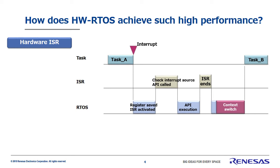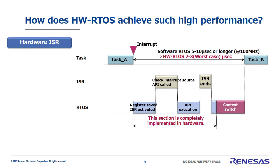However, with hardware RTOS, this blue section here is all implemented in hardware, resulting in very fast execution. Implementing this entire ISR function in hardware is what we call hardware ISR. Using hardware ISR means this entire period is run in hardware, meaning it can be executed very fast. With the conventional software RTOS, the interval to switch from task A to task B can take from 5 to 10 microseconds or possibly more on a 100 megahertz operating clock. A hardware RTOS with hardware ISR installed can run it in 2 to 3 microseconds — 3 microseconds is the maximum theoretical limit, meaning it will never take longer. By using hardware ISR, the CPU can be used for other work during that time, improving overall CPU efficiency.